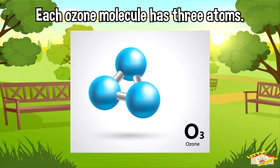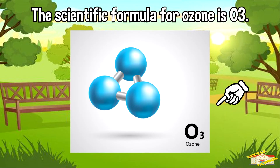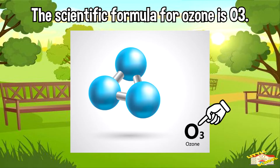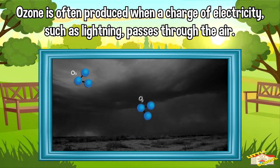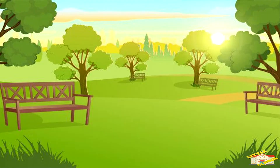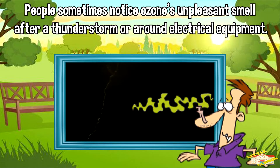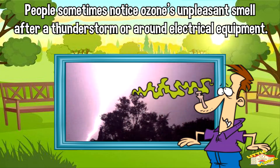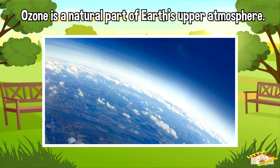The scientific formula for ozone is O3. Ozone is often produced when a charge of electricity, such as lightning, passes through the air. People sometimes notice ozone's unpleasant smell after a thunderstorm or around electrical equipment.